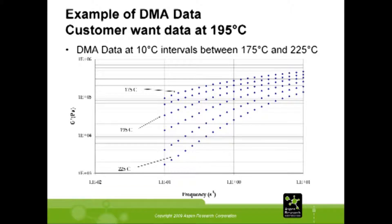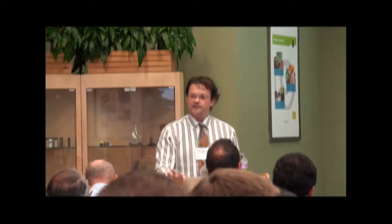Here's an example of what you can do with the DMA data. A customer called us up — this actually happened last month. They wanted to know what the material looked like at 195 degrees C. So I went into the lab and measured it between 175 and 225 degrees at 10-degree intervals. I didn't do this just to pad the bill — I did this because the customer gets far more valuable information by looking at it at a range of temperatures rather than just the one temperature they want.